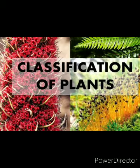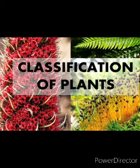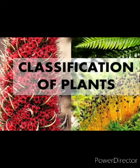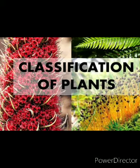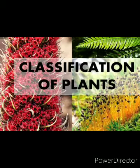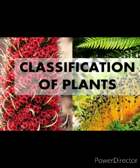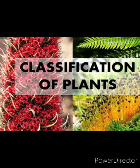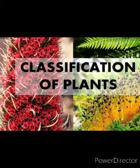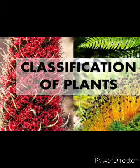Liverworts and Hornworts are lower forms of bryophytes; they are simpler in structure than mosses. In Anthocerotae, the gametophyte is undifferentiated, with rhizoids that are unicellular and unbranched. Mosses are higher forms in which the gametophyte is differentiated into stem, leaf, and root-like parts. Economic importance: Bryophytes prevent soil erosion. Peat, which is a valuable fuel like coal, is obtained from Sphagnum.